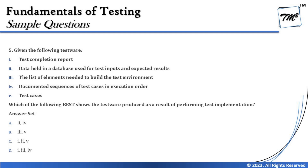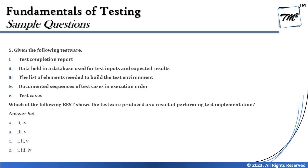The list of elements needed to build the test environment belongs to test design, because as part of test design we identify the infrastructure required for the environment — or we say designing the test environment, not building it. Designing the environment and building the environment are two different activities. Designing the environment is part of test design, and building the environment is part of test implementation. The question is about identifying test work products of test implementation, and this option is about identifying the elements needed, which happens as part of test design — so not implementation.